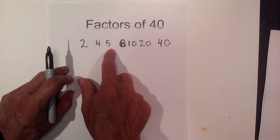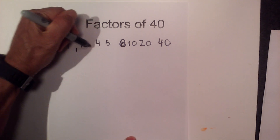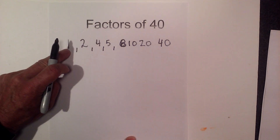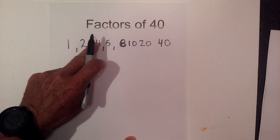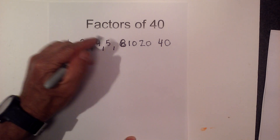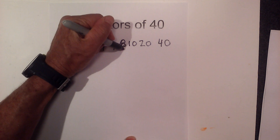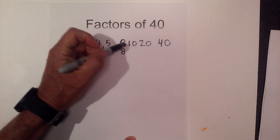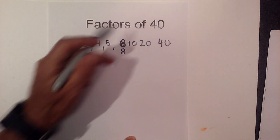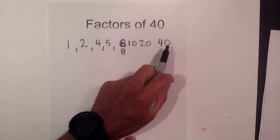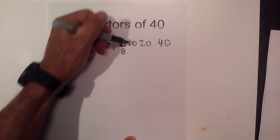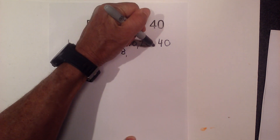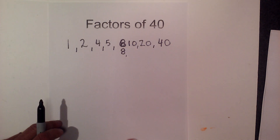Nor will 7. Here are the factors: 1, 2, 4, 5, 8, 10, 20, and 40. So there are all the factors of 40.